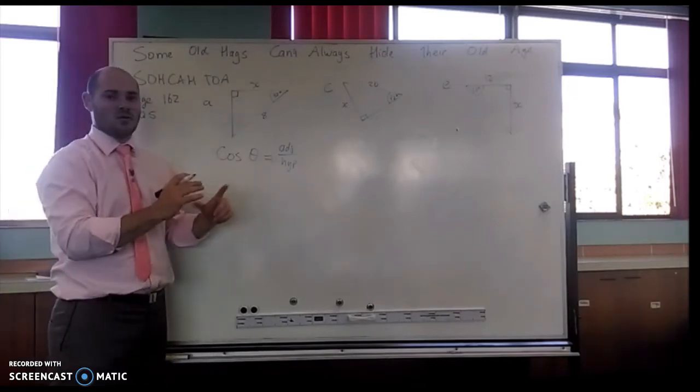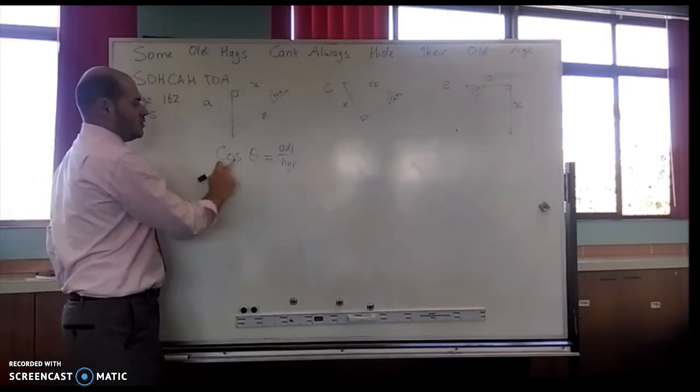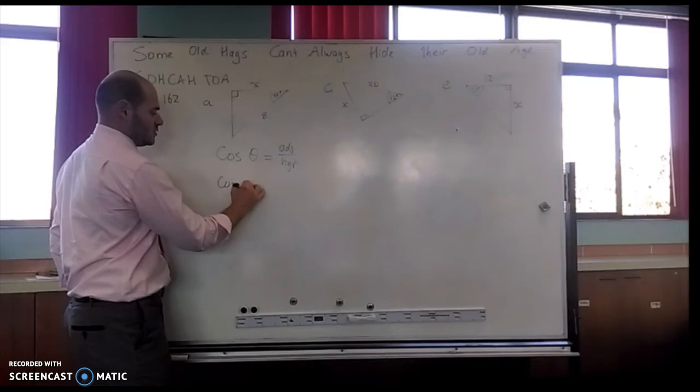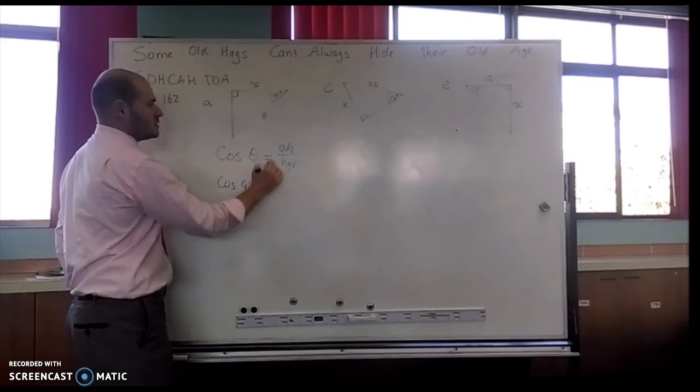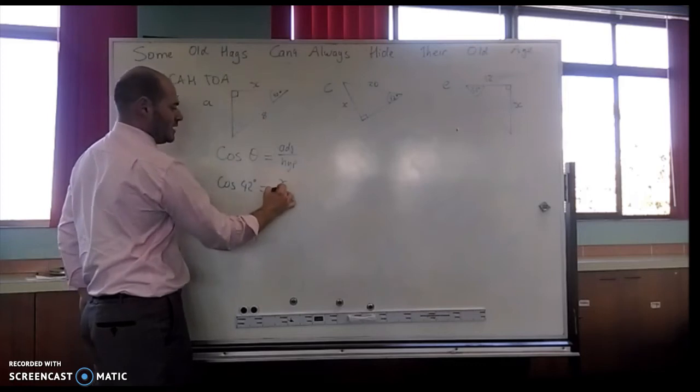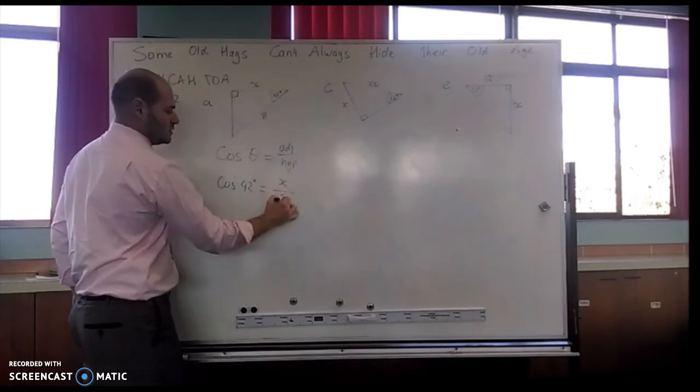So now I substitute in what I know. My angle is 42 degrees, so it becomes cos 42 degrees. The adjacent one I don't know, so it stays as x. My hypotenuse is 8.